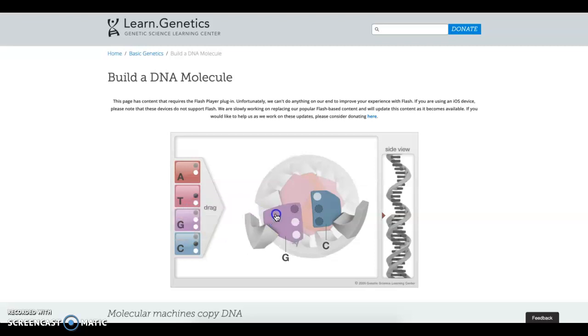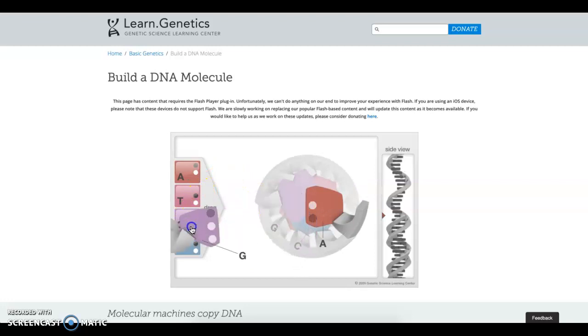G is going to pair with C. You can see the different colors and the little holes right here and here. Whichever one's missing tells you that it goes together. If I were to drag this one here, you can see that there's only one hole there.